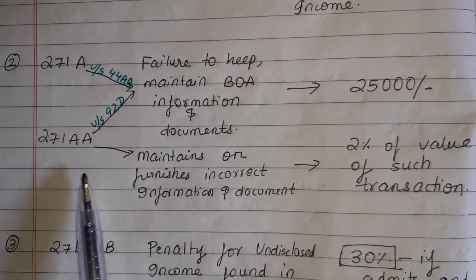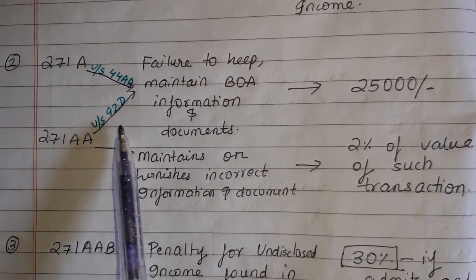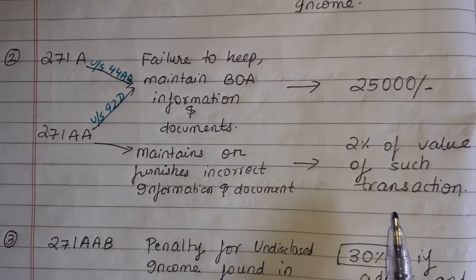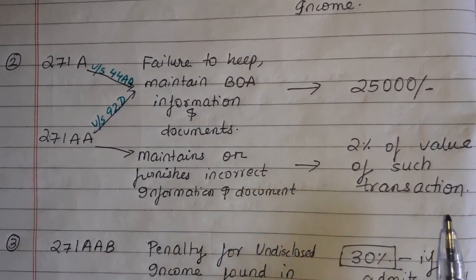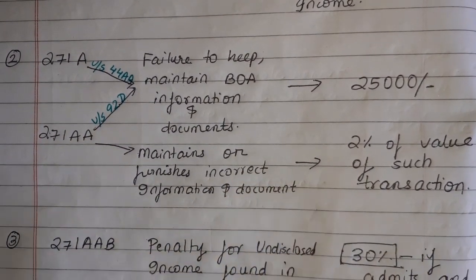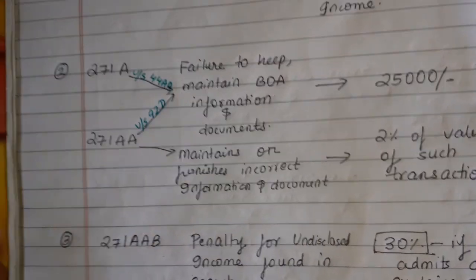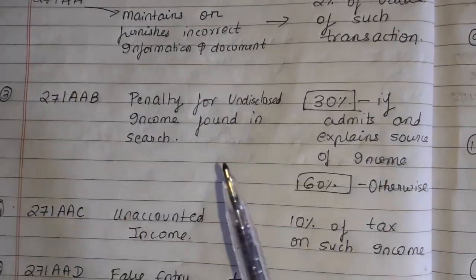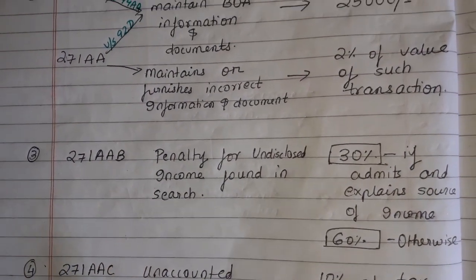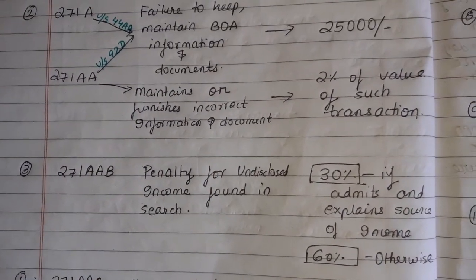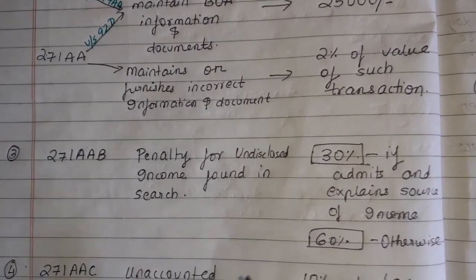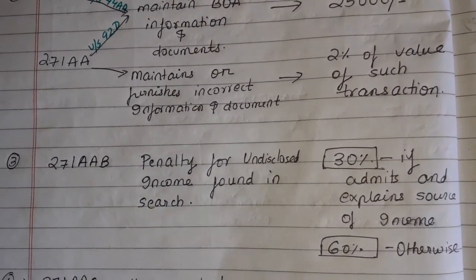In the case of international transactions under section 92D, if you don't maintain records or maintain wrong records, the penalty is 2% of the value of such transaction — not a fixed amount, but a percentage of the transaction value. I hope this helps you keep your attention and memorize it.